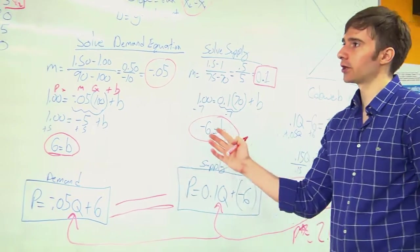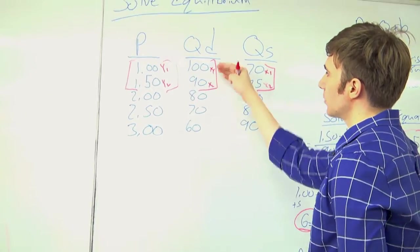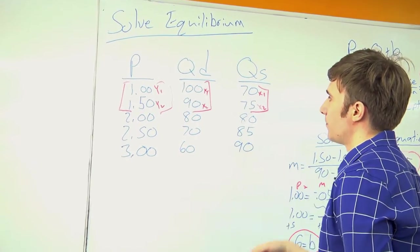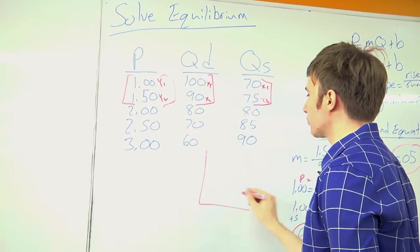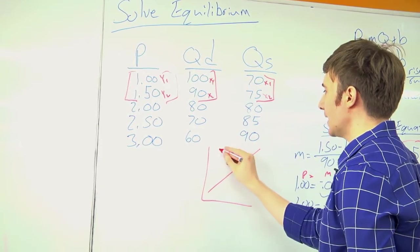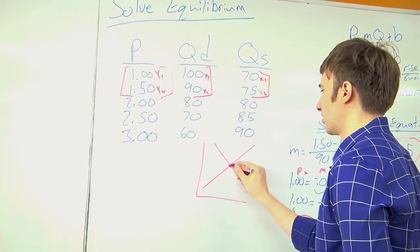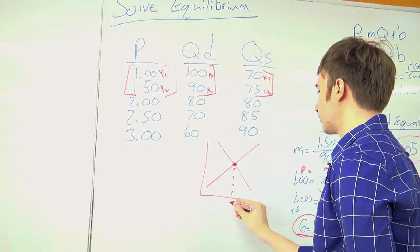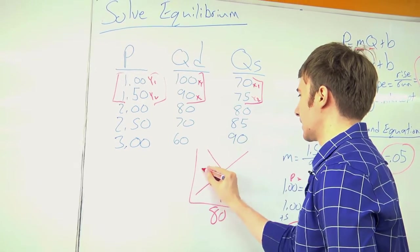Let's go back and look at our raw data in this example. Just looking at this example, I want to know where does my supply and demand meet? So we said that it's $80 and $2.